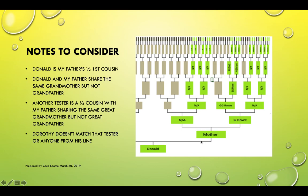We don't need to deal with Donald's grandfather at all because he's not related to me. So we go from Donald's mother up to Donald's grandmother. The next part is relevant to that other half cousin — we're now moving up to the great-grandparents level.